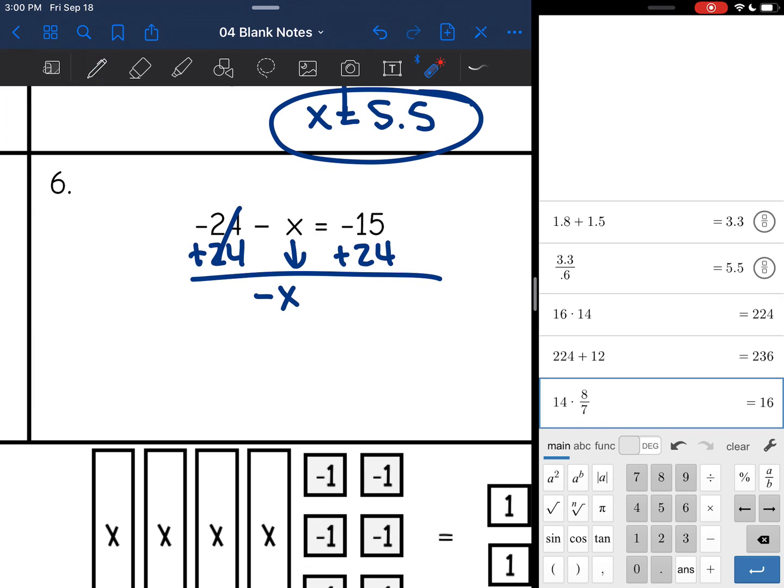And I get negative x. Make sure you bring down that negative. It's really easy to forget that, so you have to make sure you bring down the negative sign. And then negative 15 plus 24 is 9. Divide by negative 1. And I get x equals negative 9.